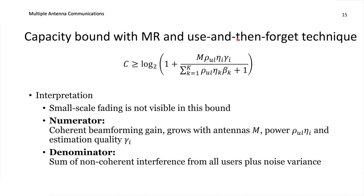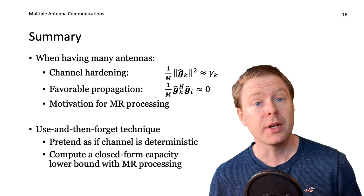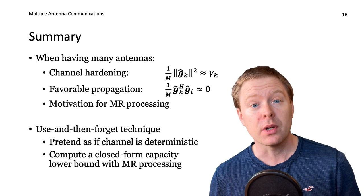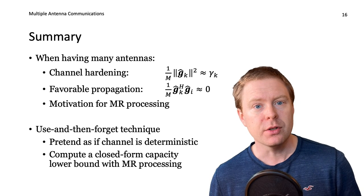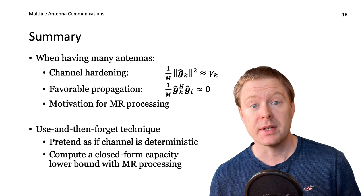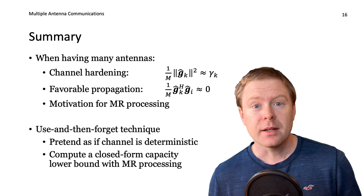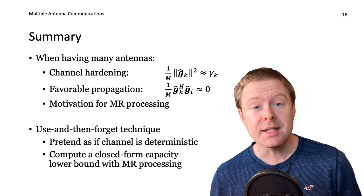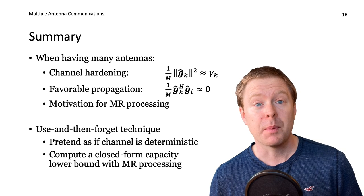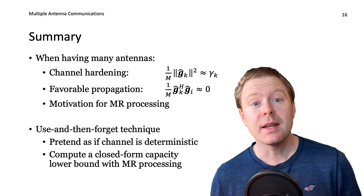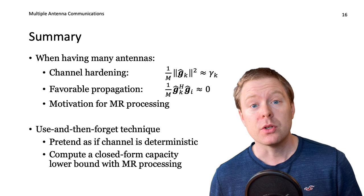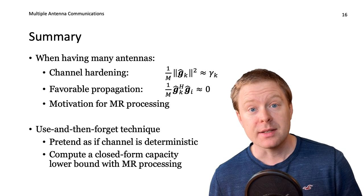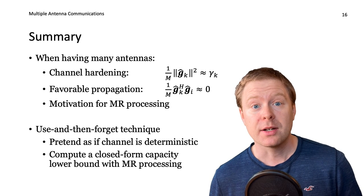In summary, with many antennas two important phenomena appear. First, channel hardening: the channel quality becomes approximately constant even with fading, meaning the squared norm of g-hat-k divided by M is approximately gamma k. Second, favorable propagation: the inner product of estimates of two different users divided by M is approximately zero. These phenomena motivate maximum ratio processing — even with multiple users the interference diminishes — and the use-and-forget technique, which treats the channel as deterministic thanks to channel hardening, yielding a closed-form capacity expression.